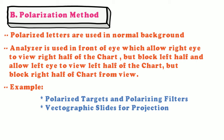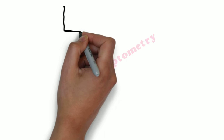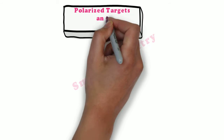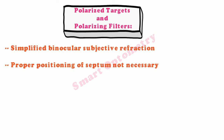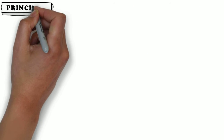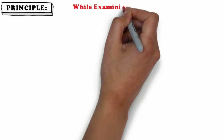Examples of equipment used include polarized letters and polarizing filters, and back-to-graphic slides for projection. It is a simplified binocular subjective refraction where proper positioning of the septum is not necessary. The distance acuity chart is divided into two halves, each covered by polarizing films.